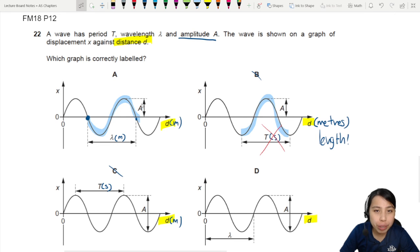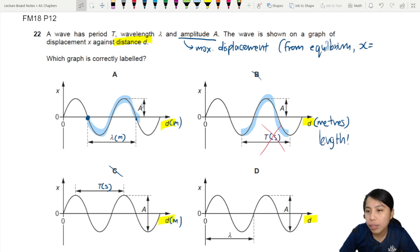So amplitude is also known as the maximum displacement from the middle, the space is from the middle. So from equilibrium, equilibrium also known as x equals zero.